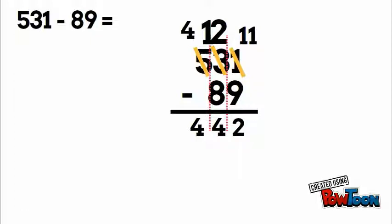So again, the key when doing the written method is whenever the top number is smaller than the bottom number, borrow one from the place value to the left and unbundle it into 10 of the place value where you need it. Thanks for watching, see you next time, peace out.